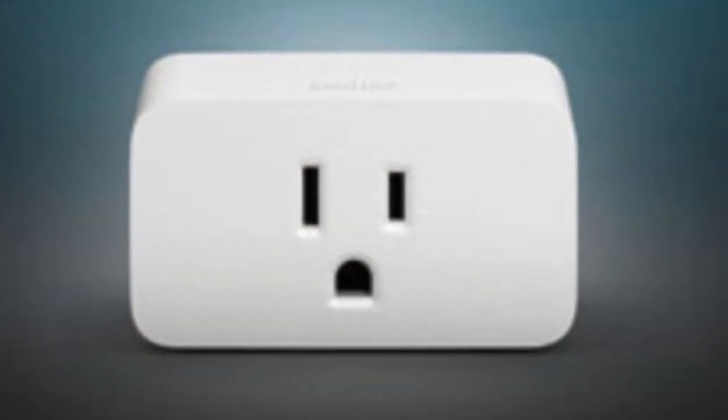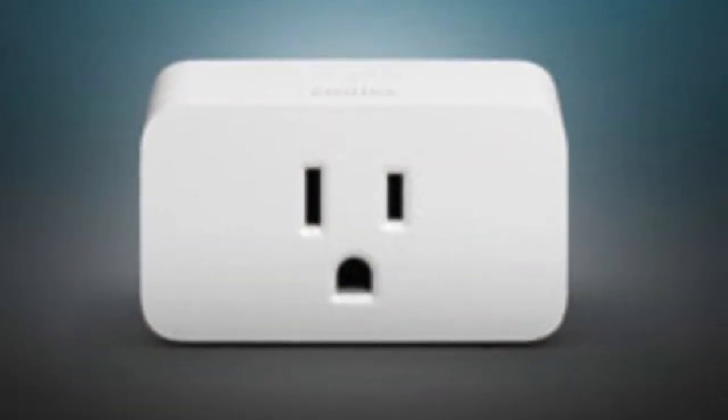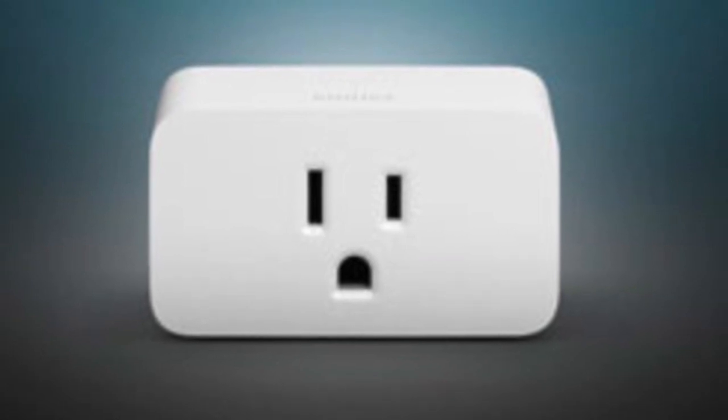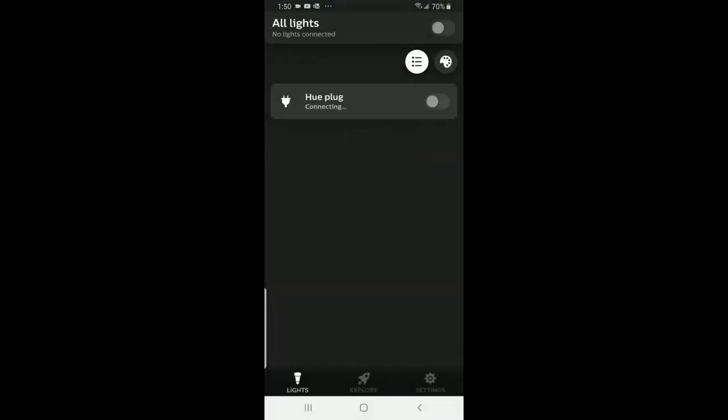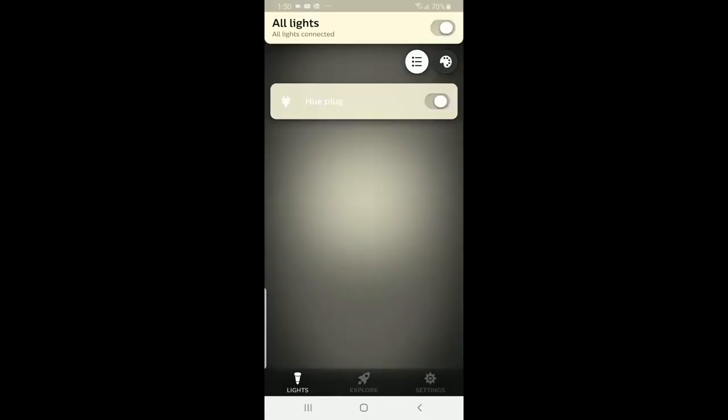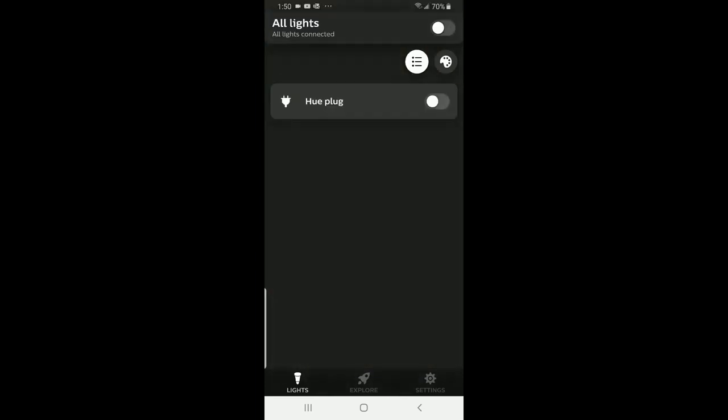The bridge opens up full functionality for this thing and allows you, for example, to get on Wi-Fi and control your plug from anywhere in the world that has Wi-Fi. Now, with this particular one, if you don't have the Hue bridge, you're kind of stuck just using it with Bluetooth.